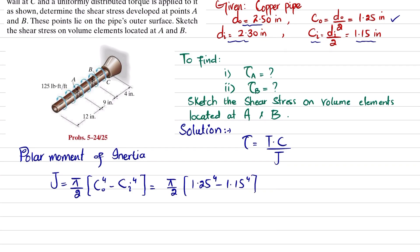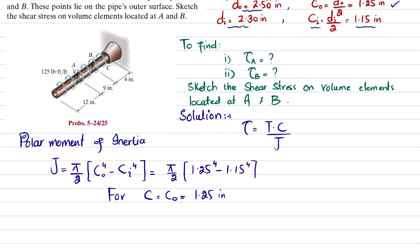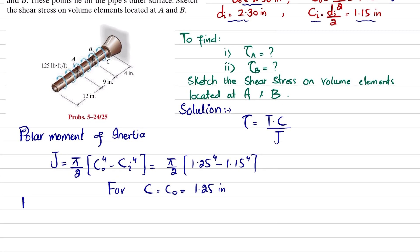The value of c is the distance from the center to the outermost fiber, which is c_outer = 1.25 inches.